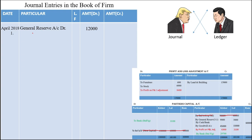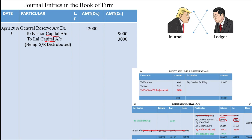Now, for the credit side — Kishore and Lal were distributed among these two partners, so we write: to Kishore capital account, to Lal capital account. Pay attention: don't write only 'to Kishore account' or 'to Lal account' — that is totally wrong. You must write 'Kishore capital account' and 'Lal capital account,' because if you don't, marks get cut. So keep this in mind. This is our first journal entry — the general reserve is finished.